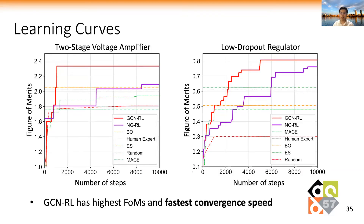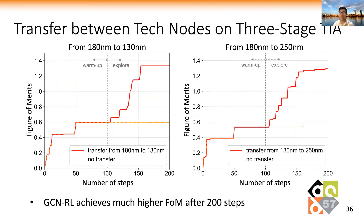Here are the learning curves on the two-stage voltage amplifier and LDO regulator. GCNRL is shown in the red curves. The results show that besides achieving high figure-of-merit values, GCNRL also has the fastest convergence speed. Here we show the knowledge transfer between technology nodes on the three-stage transimpedance amplifier. The agent is trained on 180 nm and transferred to 130 nm and 250 nm. GCNRL, shown in the red curve, can achieve much higher figure-of-merit values after only 200 steps.